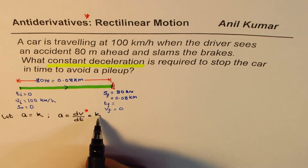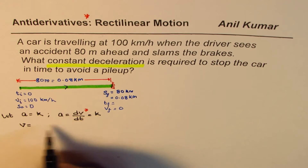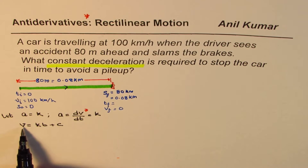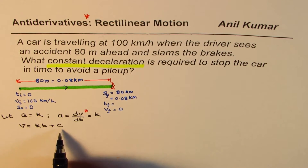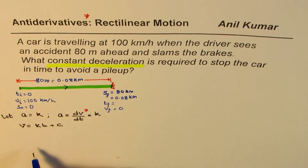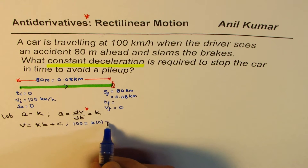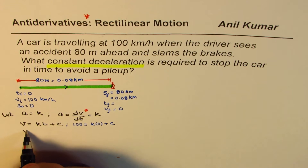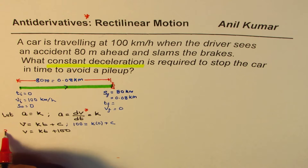We're looking for a term whose derivative will be k. That value gives us v equals kt plus c. If you take the derivative of this, dv/dt equals k. To find the value of c, we substitute initial values: at t equals 0, velocity is 100. So 100 equals k times 0 plus c, giving c equals 100. Therefore the velocity equation is v equals kt plus 100.